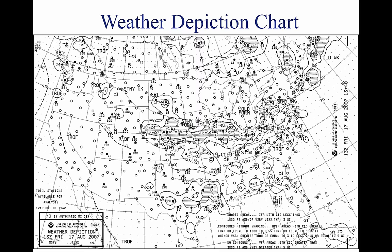A weather depiction chart details surface conditions as derived from METAR and other surface observations. The weather depiction chart is prepared and transmitted by computer every three hours beginning at 0100 Zulu time, and is valid at the time of the plotted data. It is designed to be used for flight planning by giving an overall picture of the weather across the United States. This chart typically displays major fronts or areas of high and low pressure, and provides a graphic display of IFR, VFR, and MVFR (marginal VFR) weather. Areas of IFR conditions — ceilings less than 1,000 feet and visibility less than 3 miles — are shown by a hatched area outlined by a smooth line. MVFR regions — ceilings 1,000 to 3,000 feet, visibility 3 to 5 miles — are shown by a non-hatched area outlined by a smooth line.